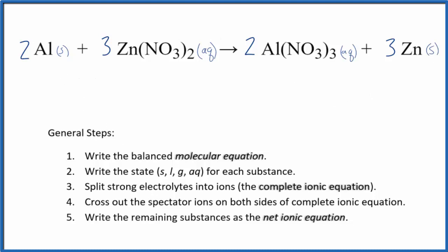Now we're going to split the strong electrolytes apart into their ions. Aluminum, that's a solid, so we're just going to write 2Al for aluminum. I won't write the states right now. We'll do that at the end. Plus, I have three zinc. We know nitrates are one minus. We have two of them, so zinc is two plus.